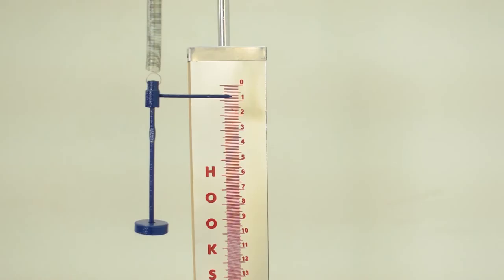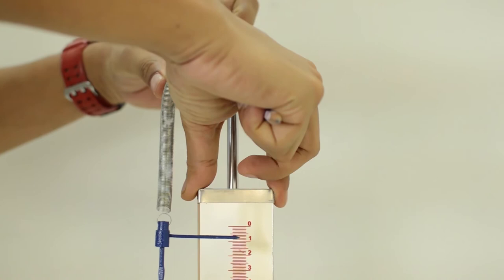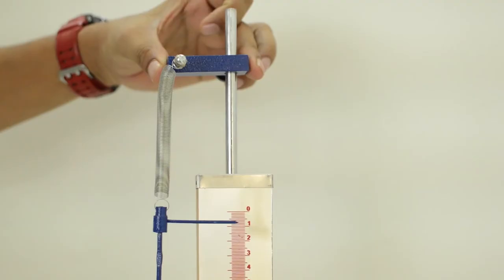Now, I will adjust the boss head on the vertical mirror structure such that the tip of the pointer comes over the divisions of the scale without touching it.